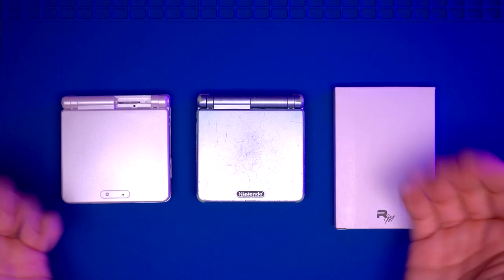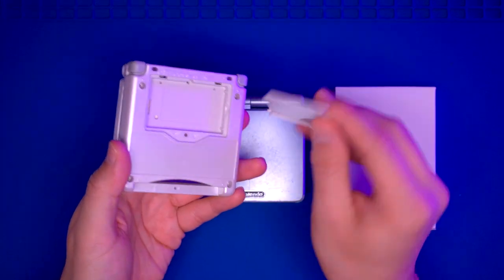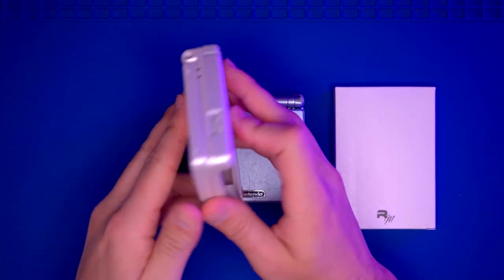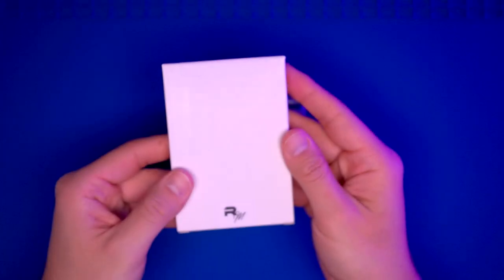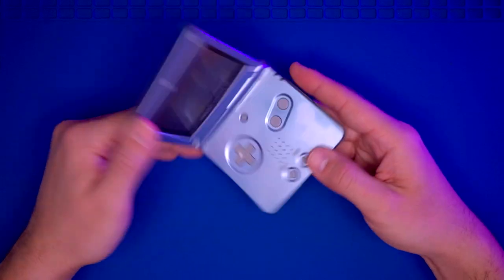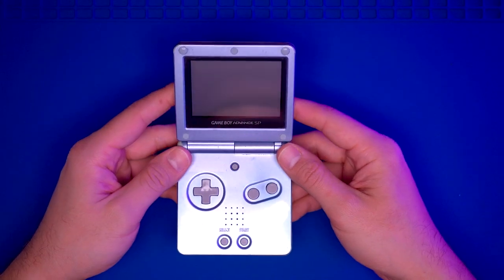To get started, make sure you have all the components you need. Here we have the pre-trimmed shell from Retro Modding, the IPS kit also from Retro Modding, and lastly, the Game Boy Advance SP that we will be modifying. This is an import AGS-001.